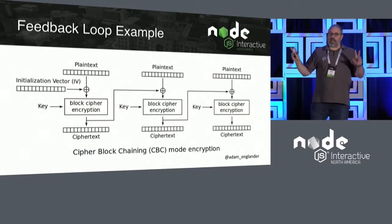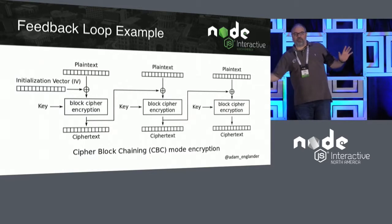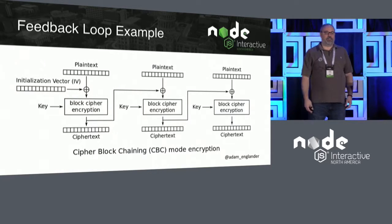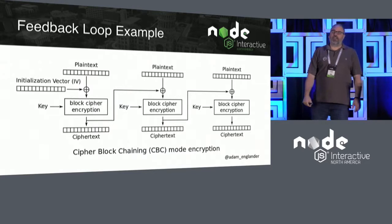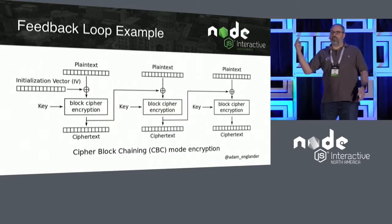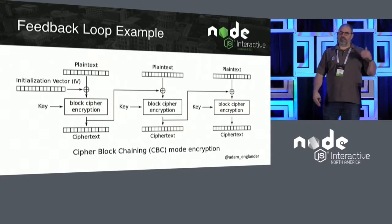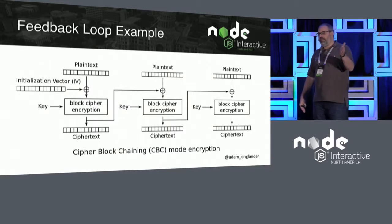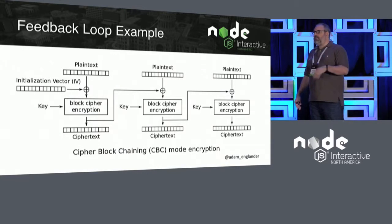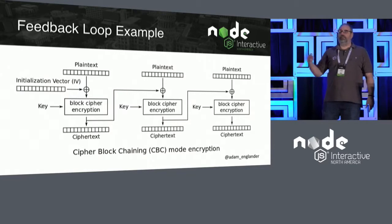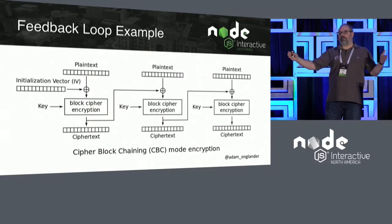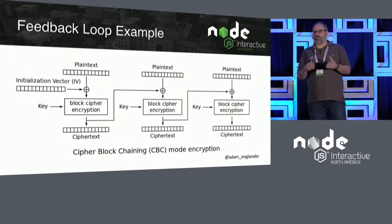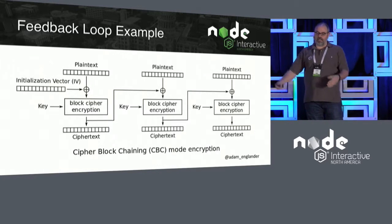And this is where the blockchain comes from. If you've heard about cryptocurrency and all this kind of stuff, this is what they mean by blockchain. It means that you cannot decrypt the last piece without having decrypted the first piece. You have to go all the way down the chain to figure out the pieces as they go in, so that you can tell if any of the data has been compromised — because if it's been compromised, it's not going to come out the same at the end.